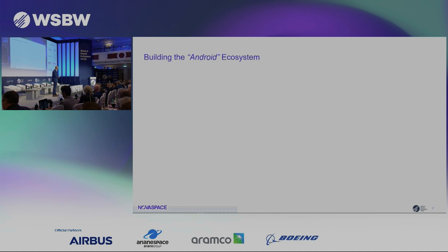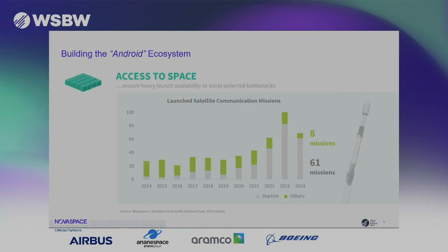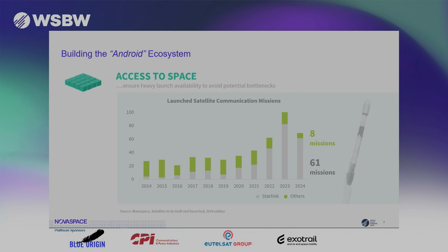In our view, the Satcom Android ecosystem is built on four key pillars. The first one is access to space. In recent years, the industry has been pretty reliant on SpaceX for launch — from the 69 Satcom launch missions this year, 61 are expected to be performed by SpaceX. So it's evident there is a clear need to have more launch vehicles becoming operational, like Ariane 6, like New Glenn and others, to avoid this potential bottleneck in the heavy launch category.